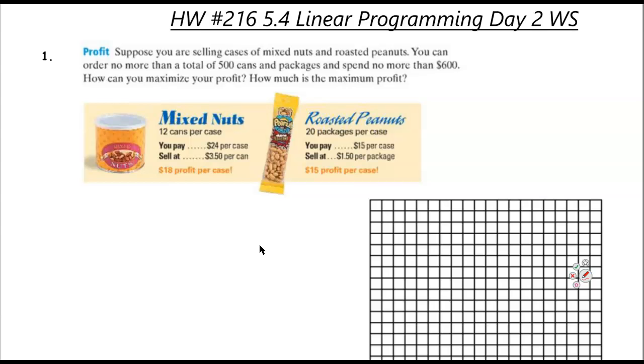Okay, so of course, let's go ahead and set some parameters. X is going to be the mixed nuts and Y is going to be the peanuts. And of course, we know that X has to be greater than or equal to 0 and Y has to be greater than or equal to 0. But those are not only our constraints.